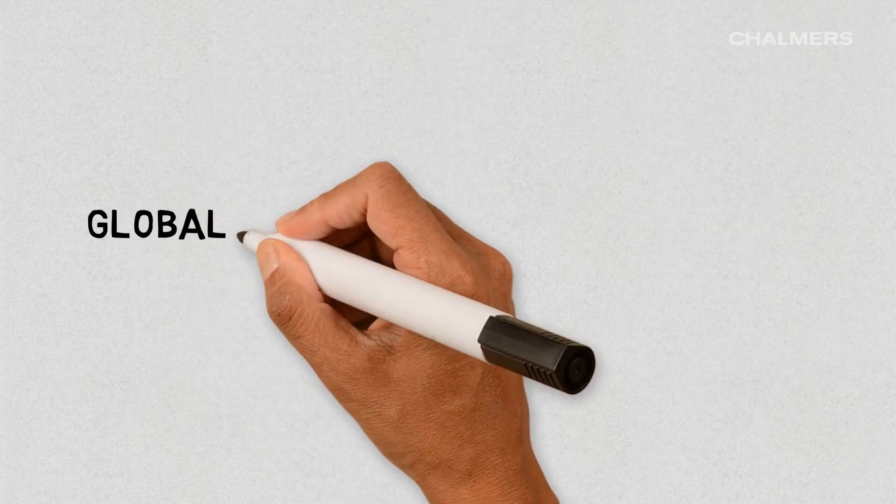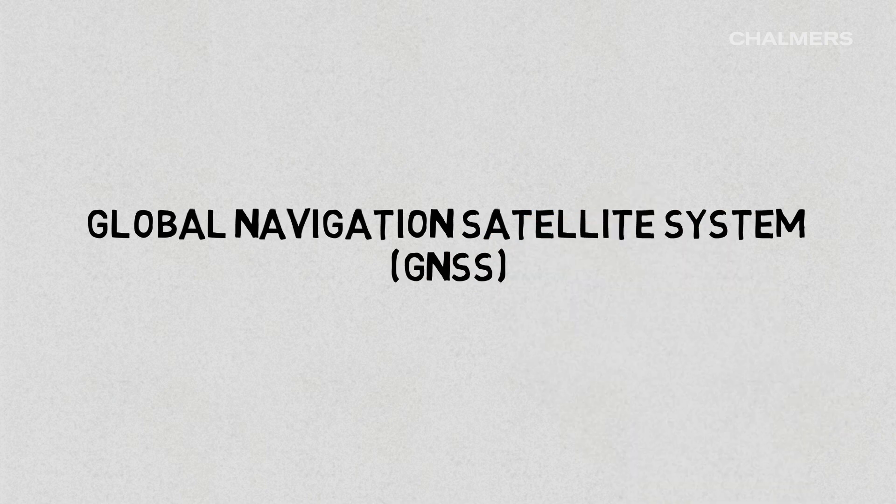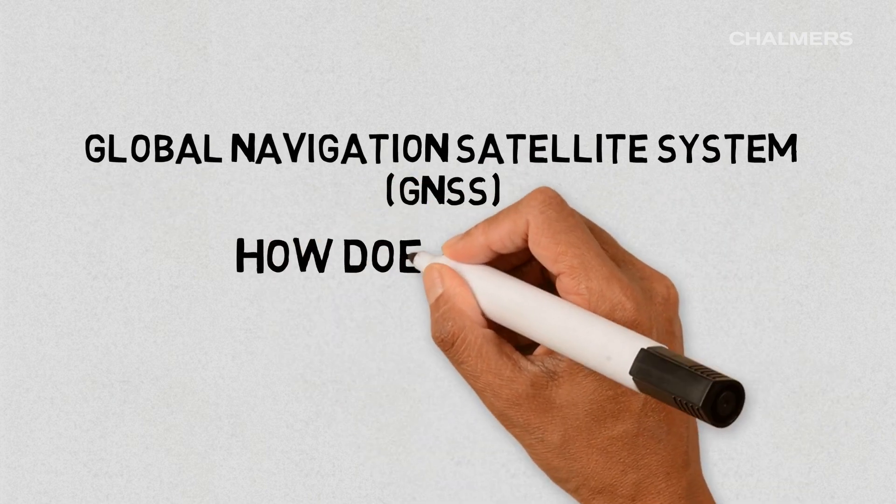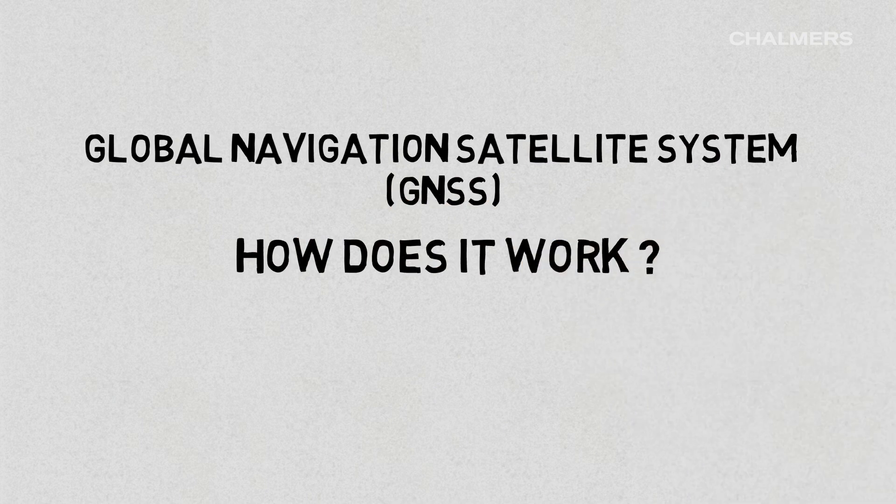And all because of the Global Navigation Satellite System, a system which we use on a daily basis for many different purposes. So, how does your mobile phone know exactly where you are?